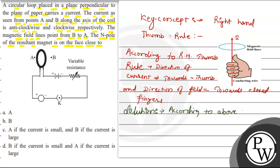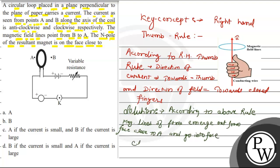According to the above rule, all the magnetic lines of forces will emerge out from the face close to A and go into the face close to B.